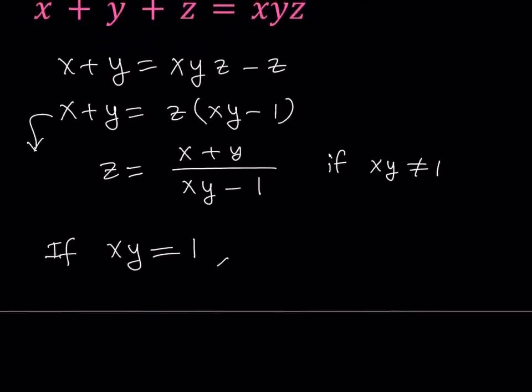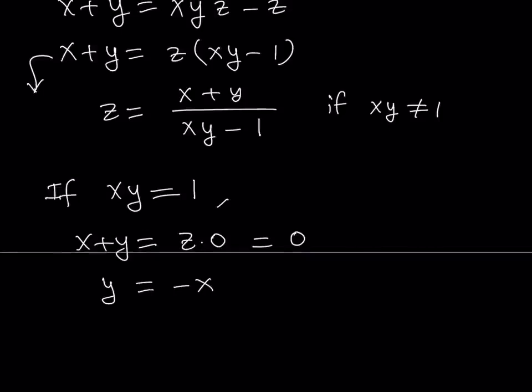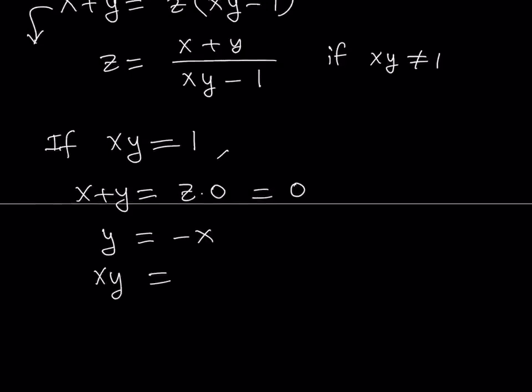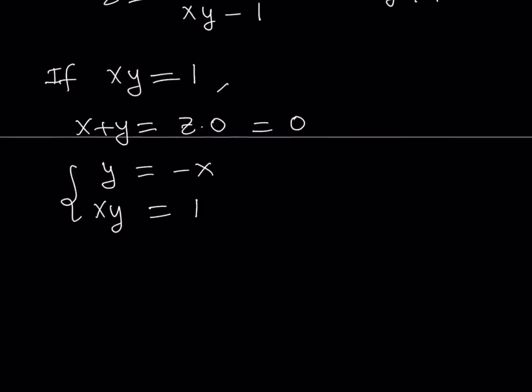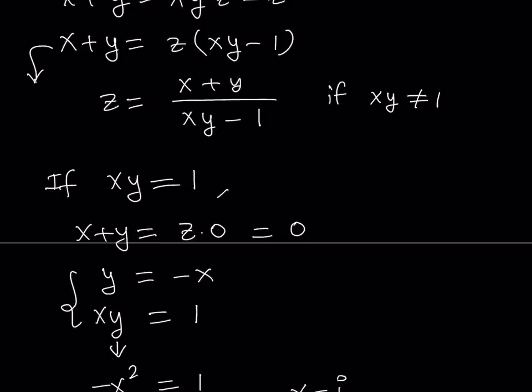If xy is equal to 1, from this equation I'm getting x plus y equals z times xy minus 1, which is z times 0. So this gives us 0. So x plus y equals 0 means x equals negative y, or y equals negative x. We can just write it as y equals negative x. But at the same time, we also know that xy is equal to 1. So we've got a system here. Let's replace y with negative x. That's going to give us negative x squared equals 1, or x squared equals negative 1, or x squared plus 1 equals 0. But this tells you that we're not going to get real solutions from here if xy equals 1. You're only going to be getting complex solutions. In this case, x could be i or negative i. I just wanted to show you that in case you want to look for complex options. You can just isolate one of the variables and go from there or solve the equation in general.